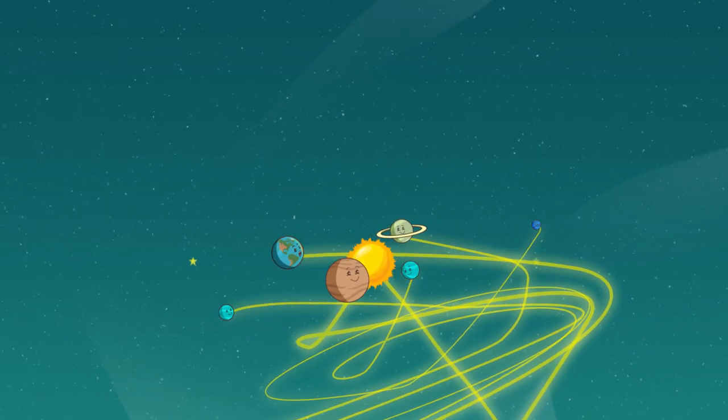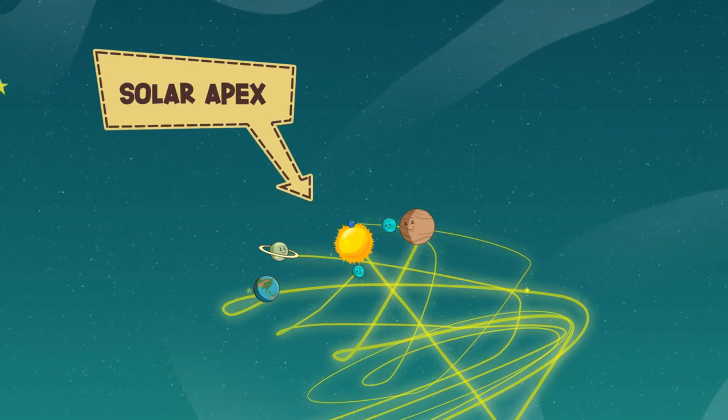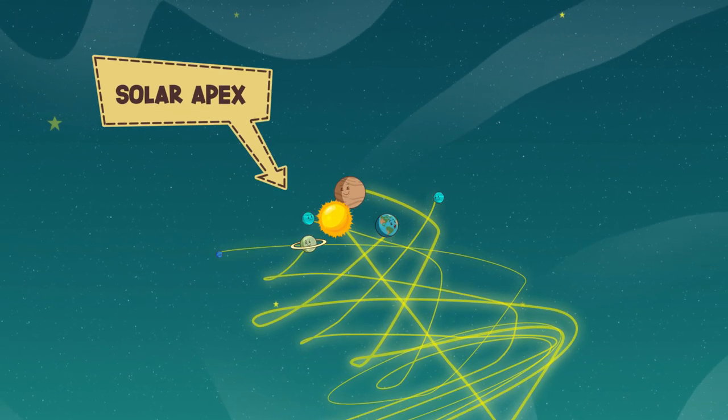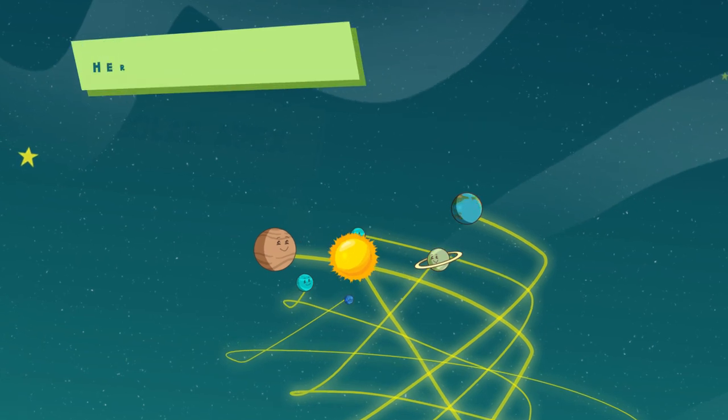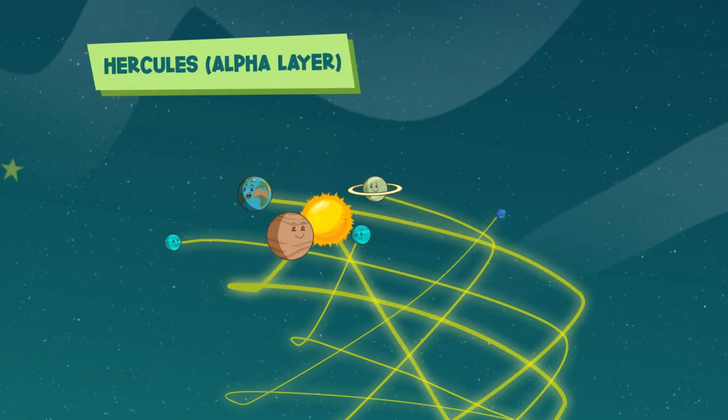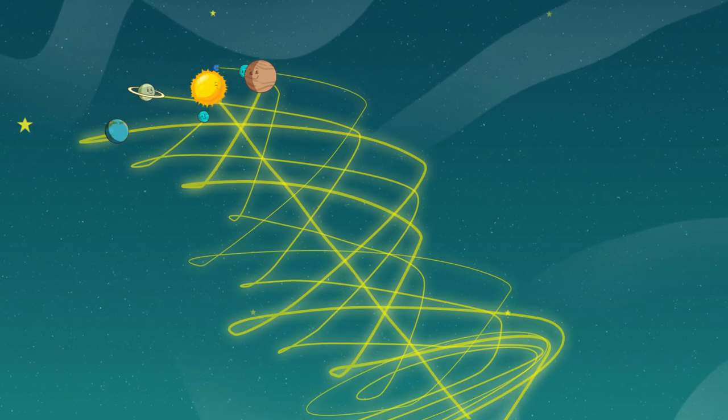It has been given a name, the solar apex. The solar system is indeed moving in space towards a point situated in the constellation of Hercules, the alpha layer, whose exact location is firmly established.